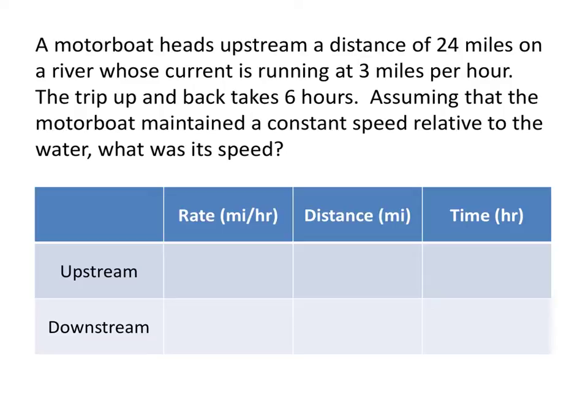But since it's a rate, let's call it r. But the upstream rate of the boat is actually r minus 3, because it's the boat speed minus the current that it's traveling against. Similarly, the downstream rate of the boat is going to be r plus 3, because it's that boat's speed plus the 3 miles per hour that the current is assisting the boat. It's making the boat go a little bit faster.